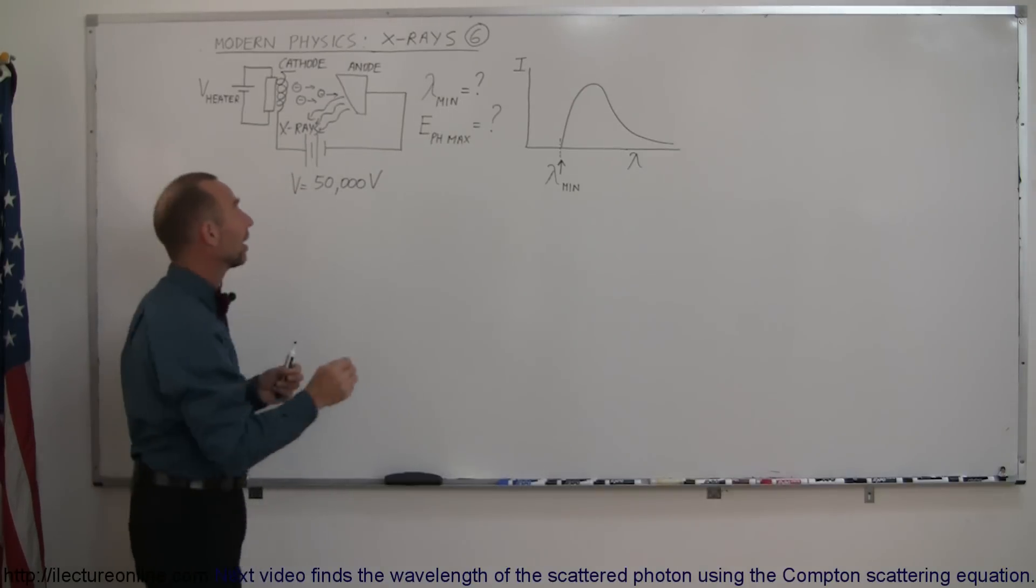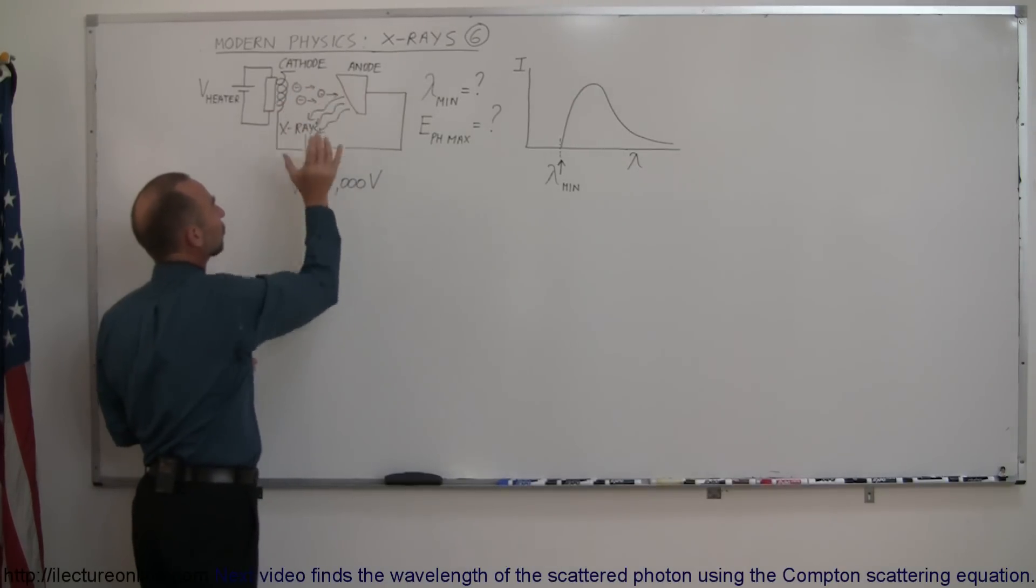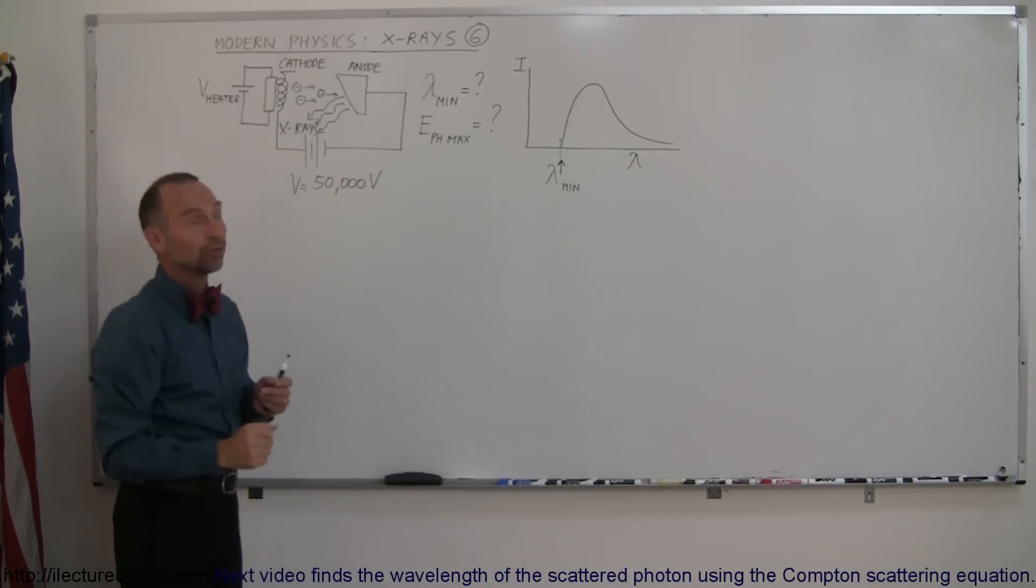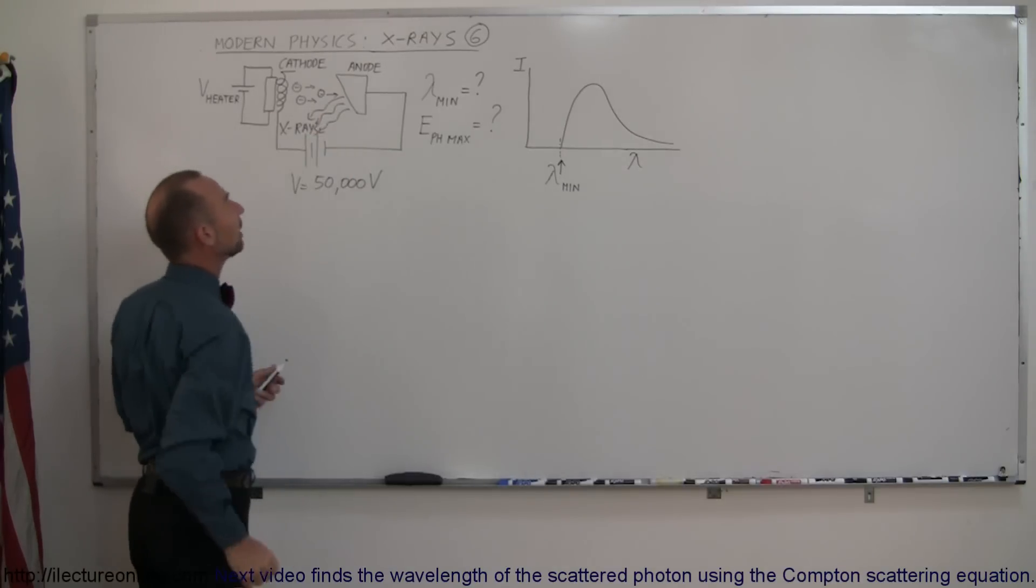And that would be in the case that the electron would completely give up the entire 50,000 electron volts of energy that it contains when it slams into the anode.